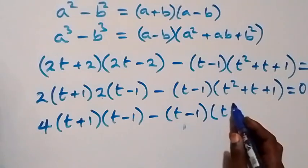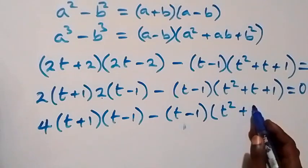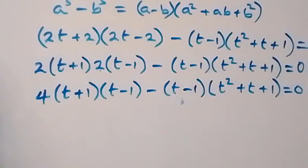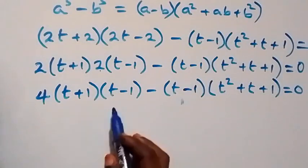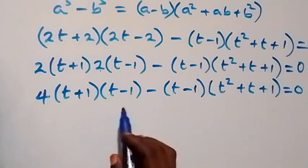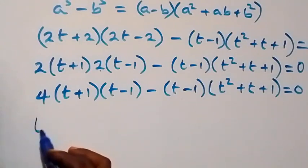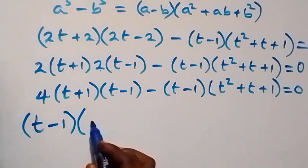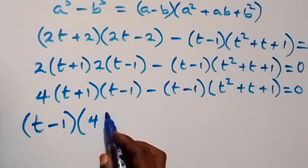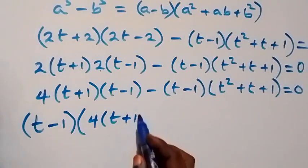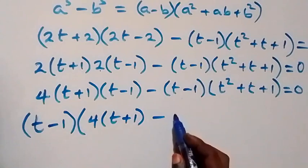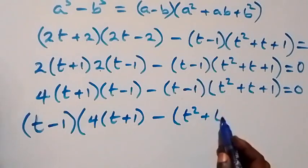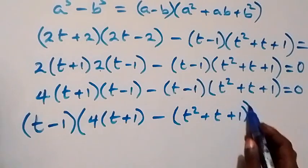Continuing, we have (t minus 1) as a common factor. This gives us (t minus 1) multiplied by the bracket containing 4 times (t plus 1), minus (t squared plus t plus 1), equals 0.